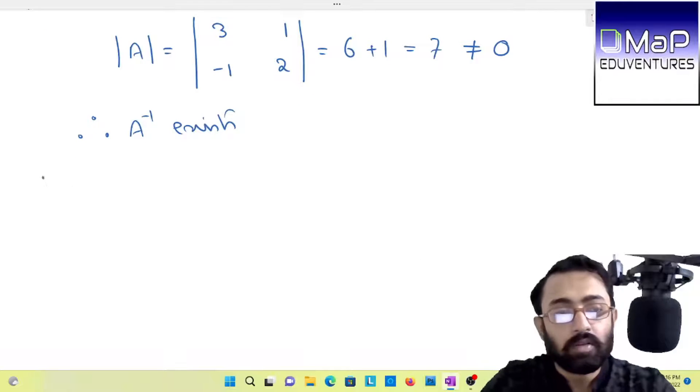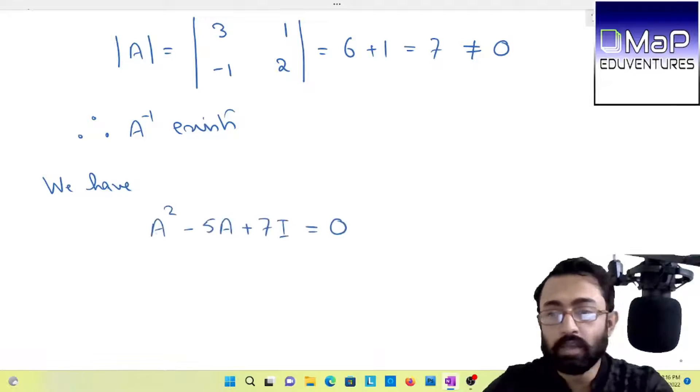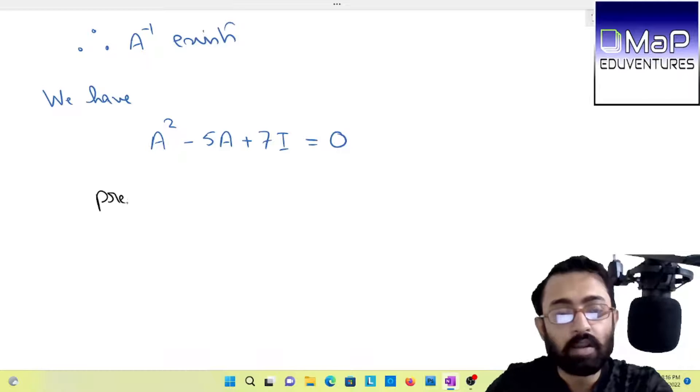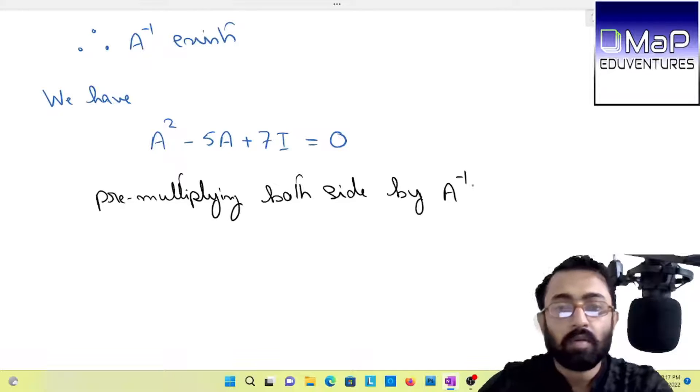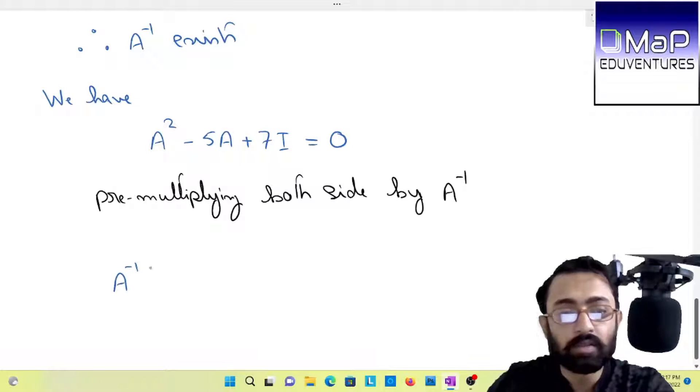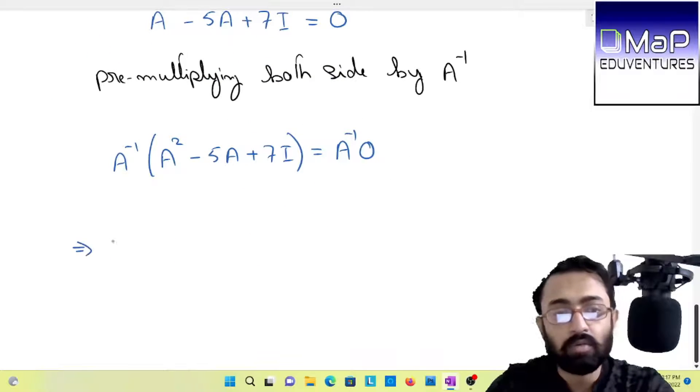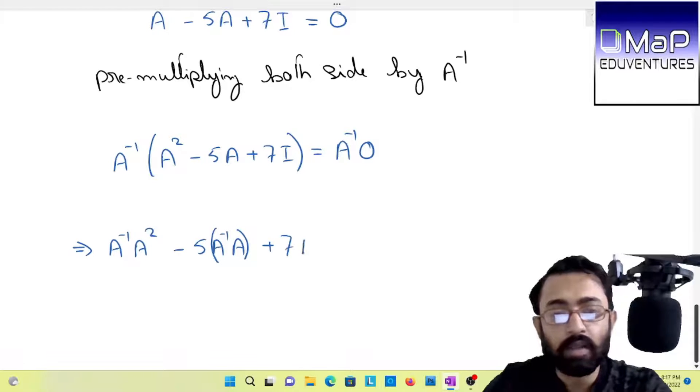Now we will use the proof to get A inverse. We will pre-multiply both sides by A inverse. That means you will have A inverse into A squared minus 5A plus 7I equals to A inverse into 0 matrix. So we get A inverse A square minus 5A inverse A plus 7A inverse I equals to 0 matrix.